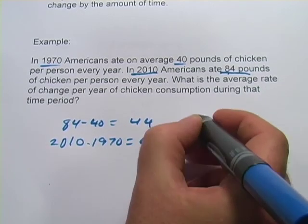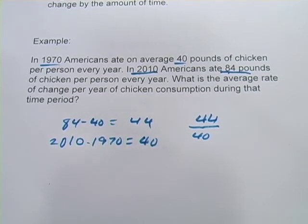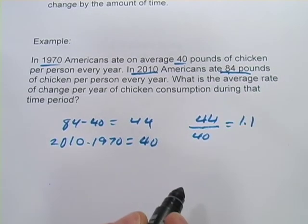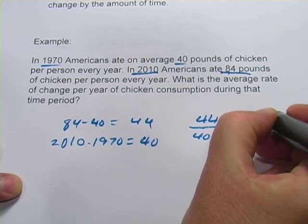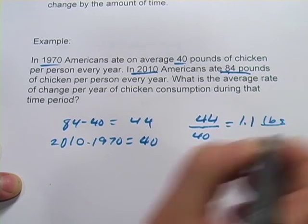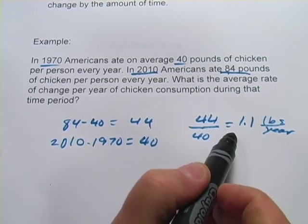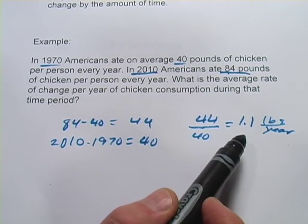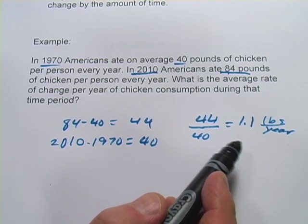Now we're going to divide the amount of change by the amount of time: 44 divided by 40, and what we get is 1.1. And 1.1 what? Well, it's pounds of chicken per year. So every year during that time period, we were eating another pound and a little bit more of chicken. That's how to do these average rate of change problems.